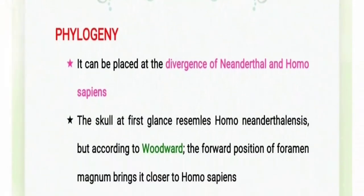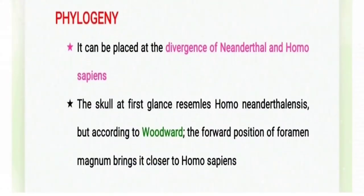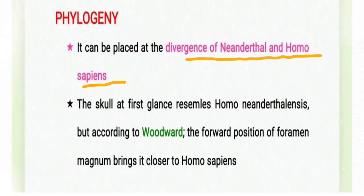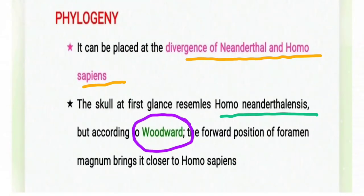Moving forward to the phylogeny — the evolutionary status of the Rhodesian Man — it shows a divergence between the Neanderthal and Homo sapiens. Some anthropologists think the Rhodesian Man shows similarity with the Neanderthal, while others think it resembles Homo sapiens. At first glance the skull resembles Homo neanderthalensis, but according to Woodward, the forward position of the foramen magnum brings it closer to Homo sapiens, since the foramen magnum is anteriorly placed as in humans.